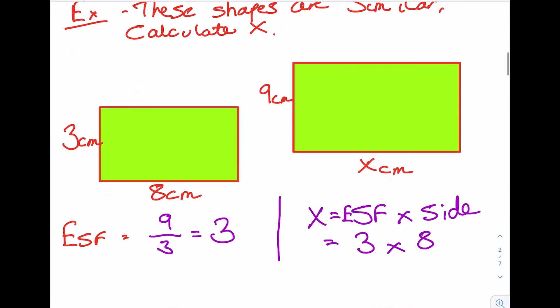3 times 8 is 24 centimeters. Quick check at the end. 3 times 3 is 9. 8 times 3 is 24. So I've done it right.